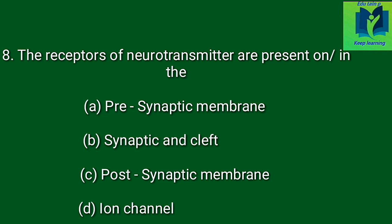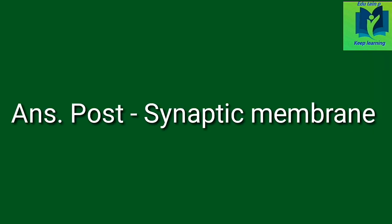The receptors of neurotransmitters are present on dash. Option A: presynaptic membrane. Option B: synaptic cleft. Option C: post-synaptic membrane. Option D: ion channels. Answer: post-synaptic membrane.